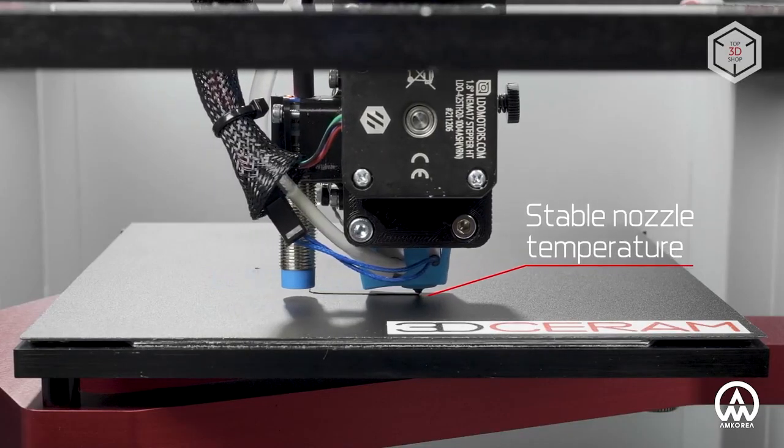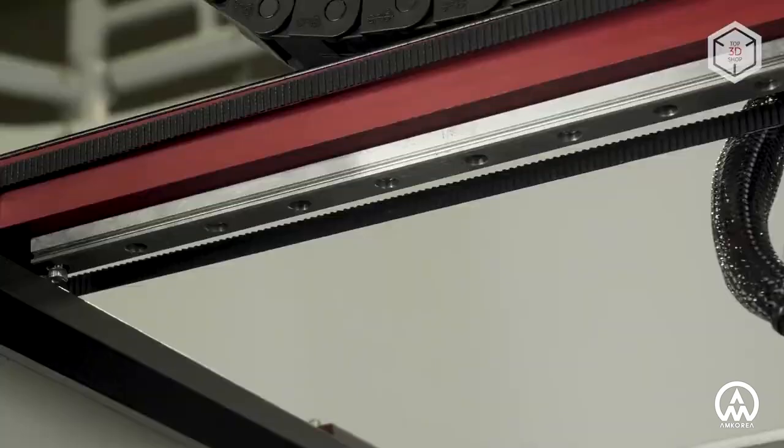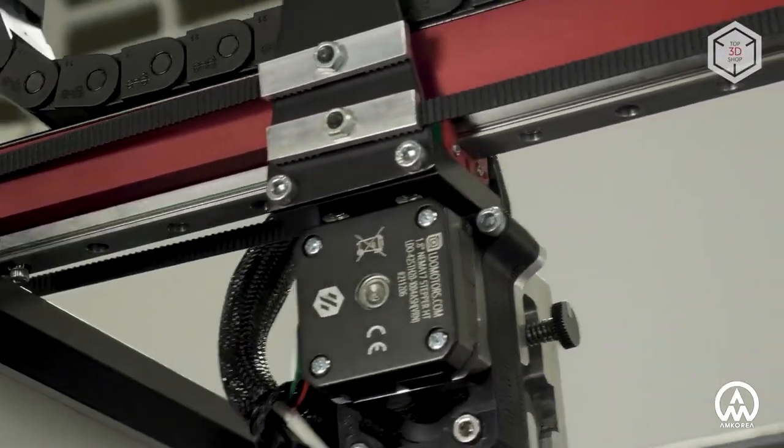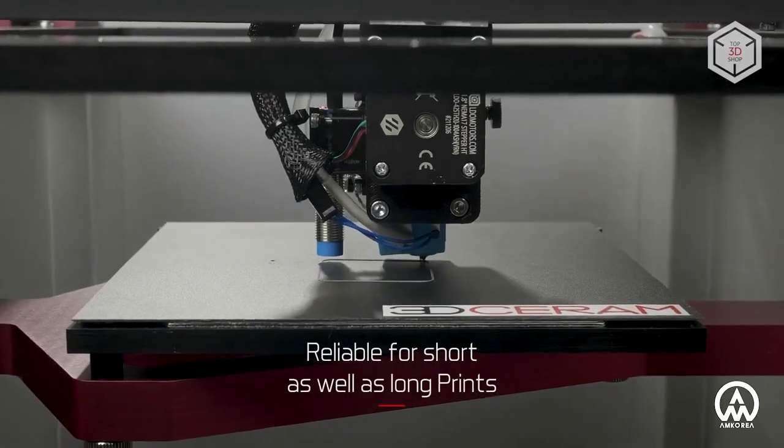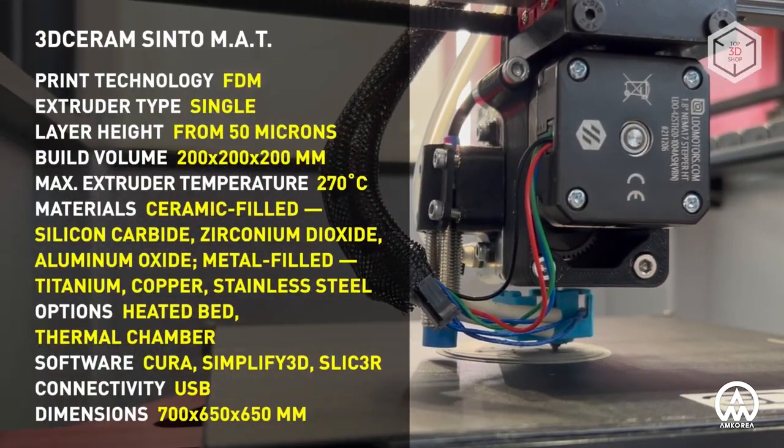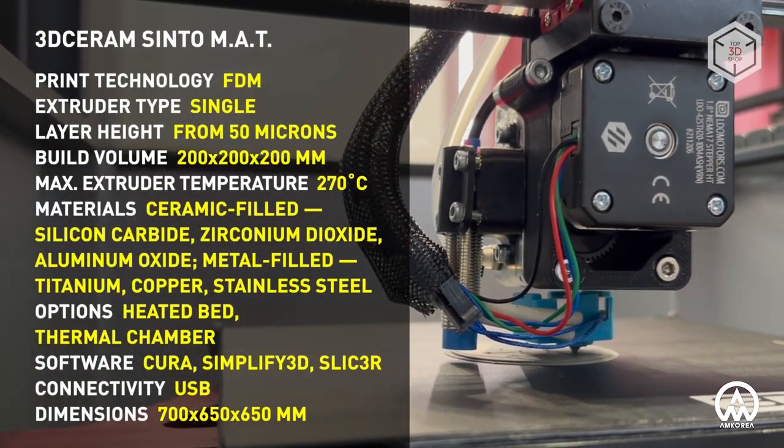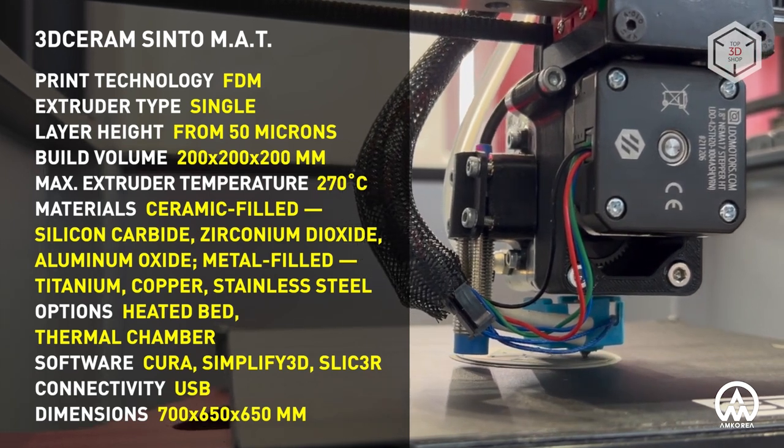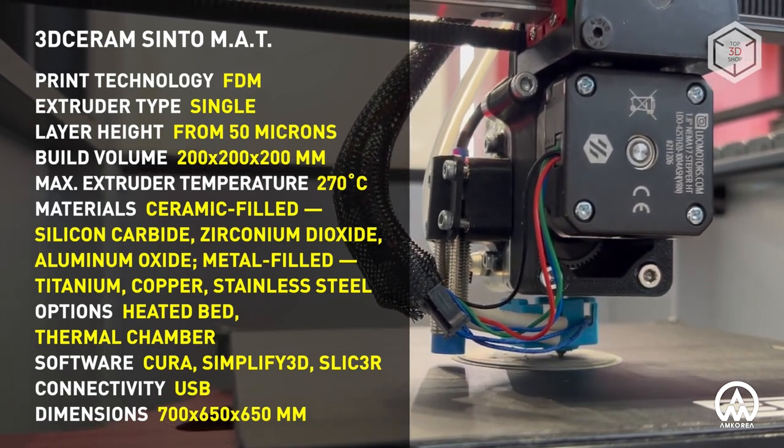Manufacturing parts using an MAT is no different from 3D printing with any other FFF machine. The ceramic-filled filament is melted layer by layer onto the print bed. Once printing is complete, the so-called green ceramic undergoes mandatory procedures of removing the binding polymer and final sintering.